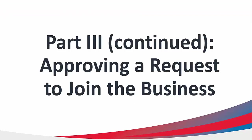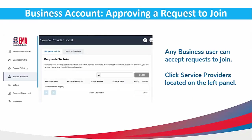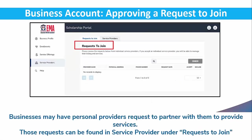Part 3 continued: Approving a Request to Join the Business. Any business user can accept requests to join. Click Service Providers located on the left panel. Businesses may have personal providers request to partner with them to provide services. Those requests can be found in Service Provider under Request to Join.